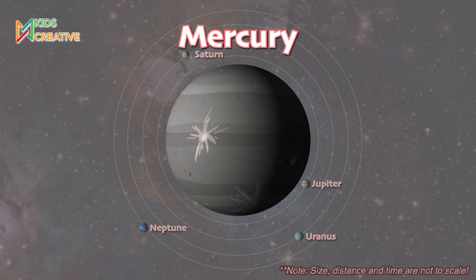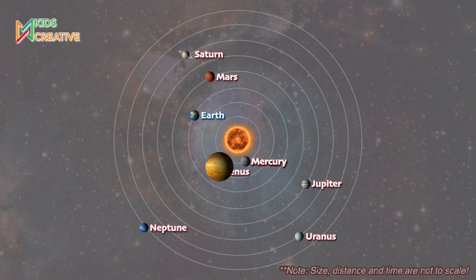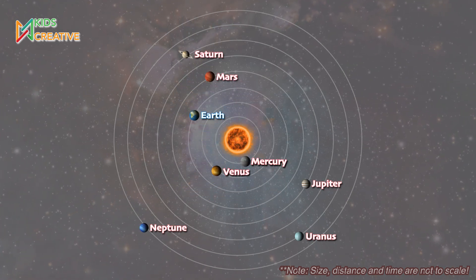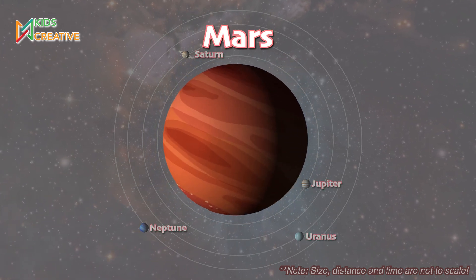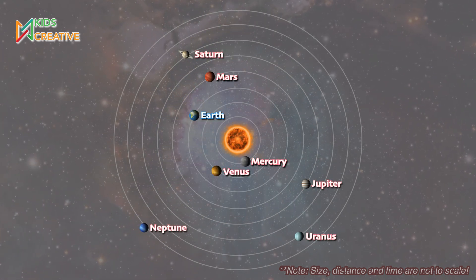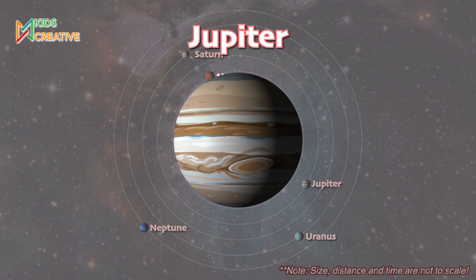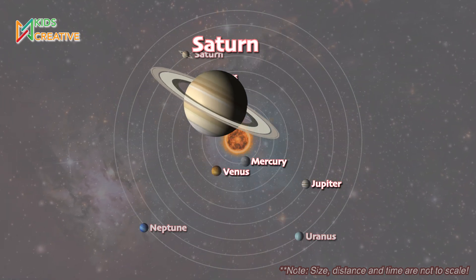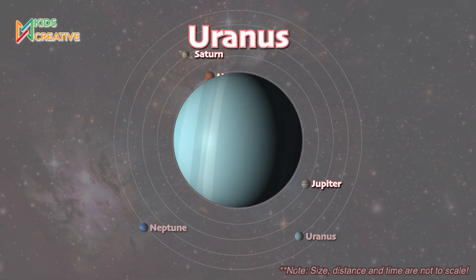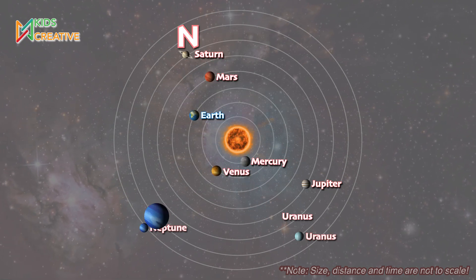Mercury, Venus, Earth, Mars, Jupiter, Saturn, Uranus, and Neptune.